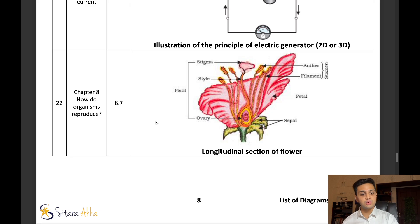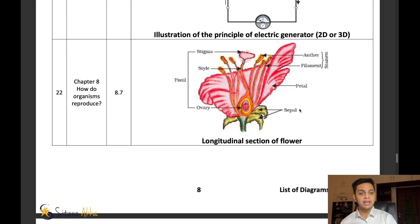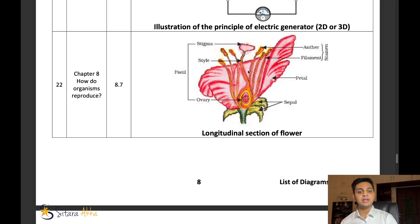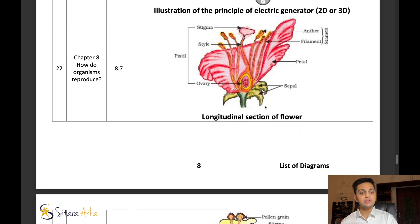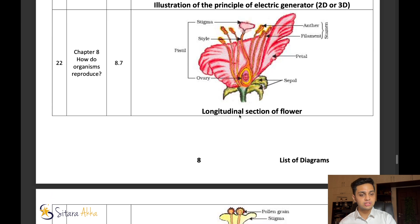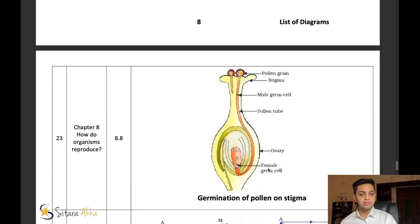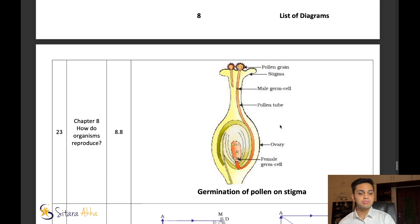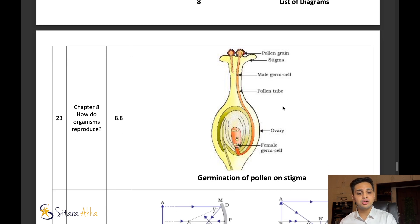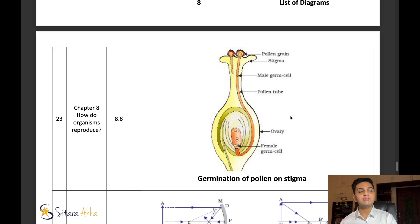Next important chapter is how do organisms reproduce. The diagram of the flower is really important. Try to understand what are the functions of the stigma, the ovary, the sepal, and the petal. If they are asking you the diagram, they will also ask you questions about functions. This diagram is also very important, which is a longitudinal section of the flower. Next, germination of pollen on the stigma. This is another very important diagram. In the diagram, you will have to label the pollen tube and the ovary. Be a little careful in this.